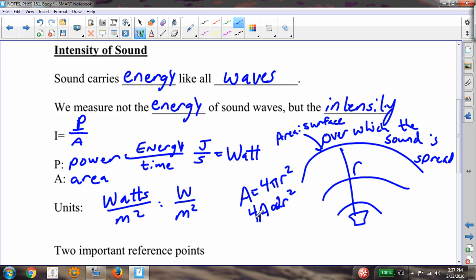And so what that does is that if I double my radius, for example, that's going to quadruple the area. And so if I move two times as far away from an object, then that means I'm going to quadruple the area over which it's spread. That means that my intensity will drop by a factor of 4. So moving even just a little bit away from a source of sound can greatly decrease the intensity of that sound.